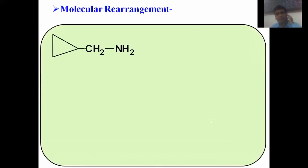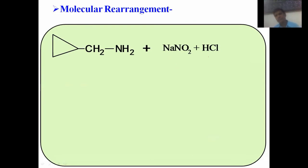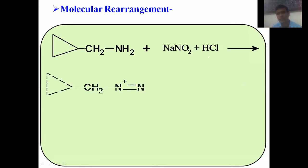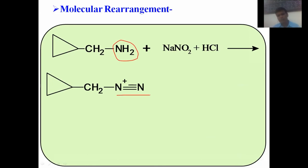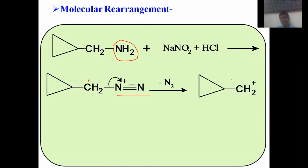Let us see a very interesting last example. This is a primary amine with a three-membered ring — cyclopropylmethylamine — with a CH2 and NH2 group. On reaction with NaNO2 and HCl at low temperature (0–5°C), the NH2 group undergoes diazotization, and we get the corresponding diazonium ion. This diazonium ion then undergoes decomposition: the C–N bond breaks, nitrogen gas is lost, and that carbon acquires a positive charge — giving a carbocation. This carbocation further undergoes rearrangement.